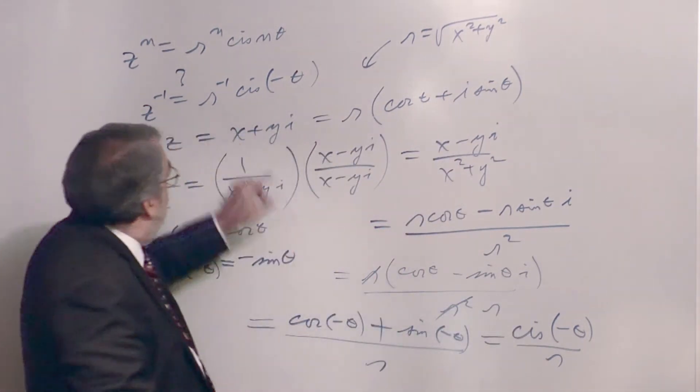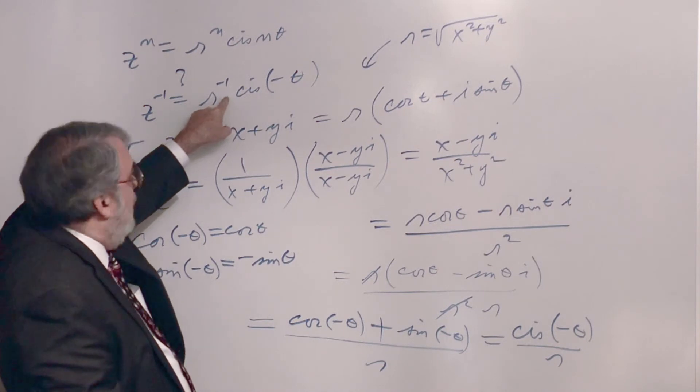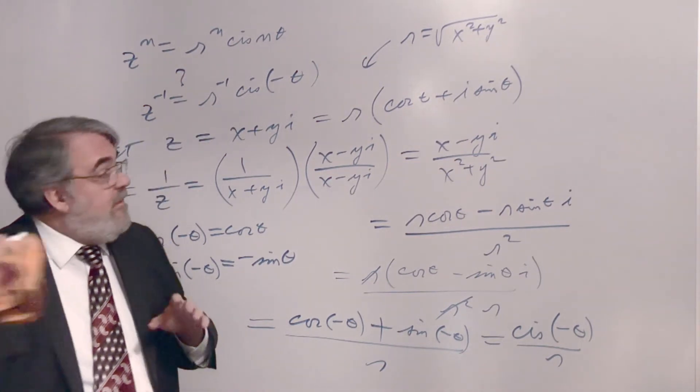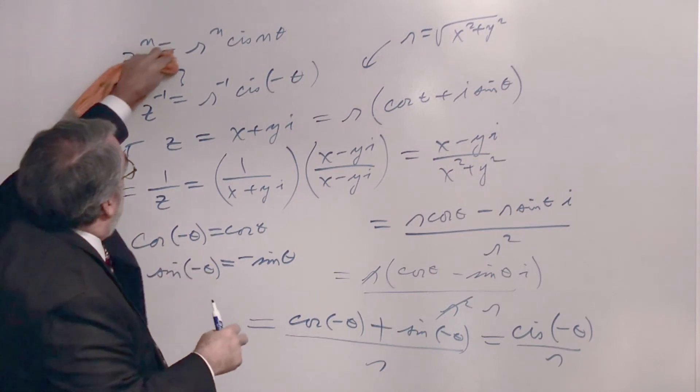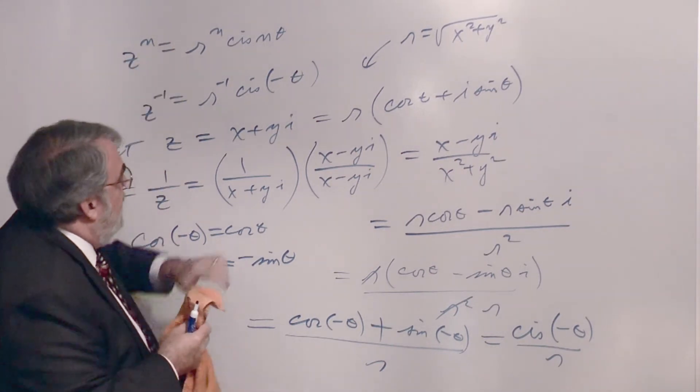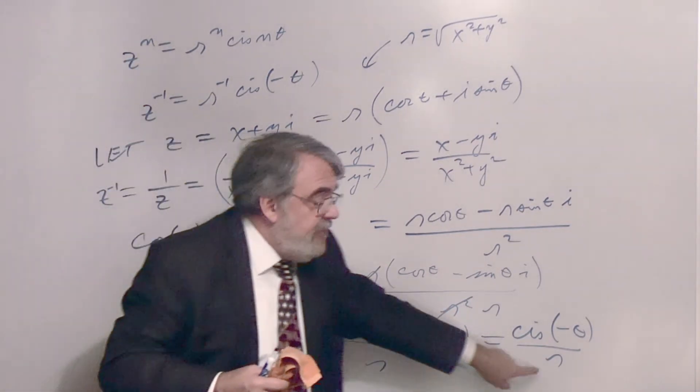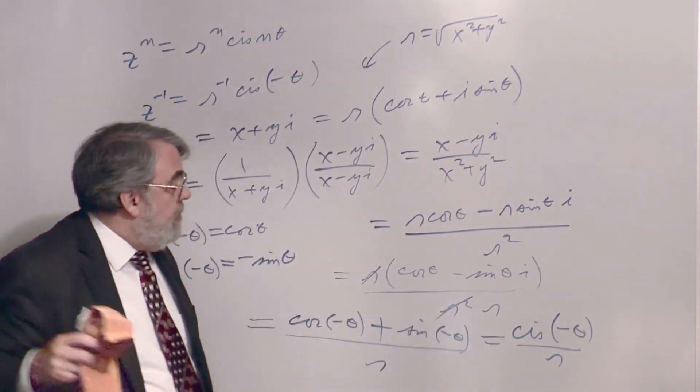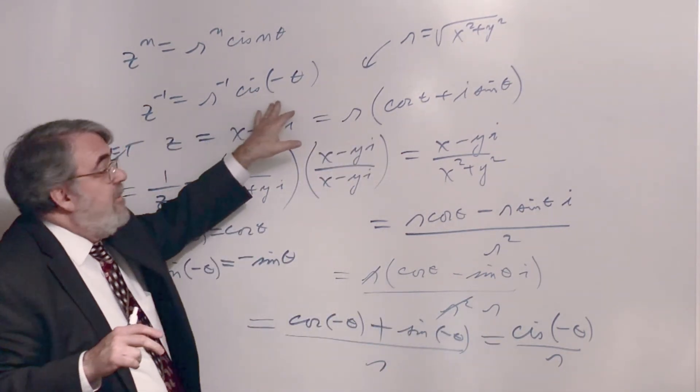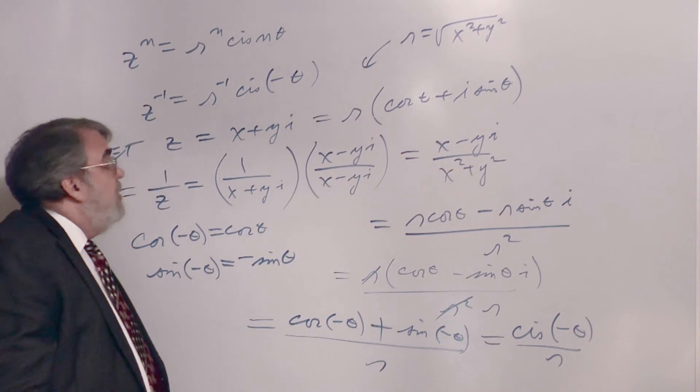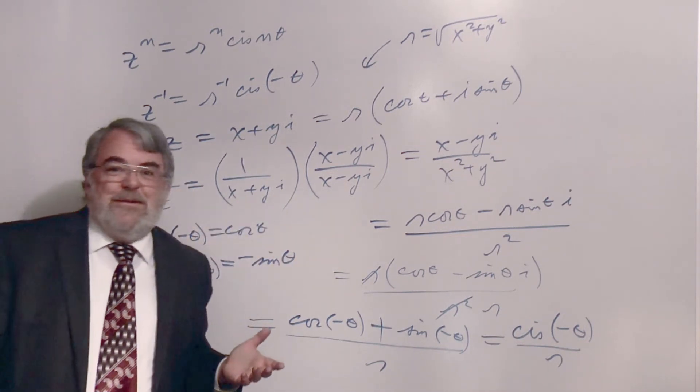1 over r means r is raised to the minus one power. And so, we've got it. We've got it. Z to the minus one, which is a reciprocal of a complex number z, is the reciprocal of its length, or absolute value, times cosine plus i sine of negative theta. So, there it is. I hope you're able to follow this.